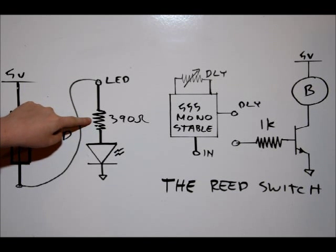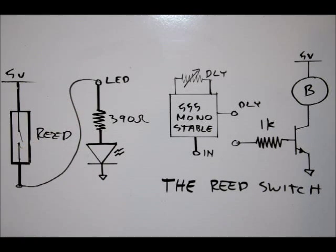Or through our 390 ohm current limiting resistor to power our LED. So when I bring a magnet close to the reed switch, the LED will turn on, and when I bring it away, the LED will turn off.